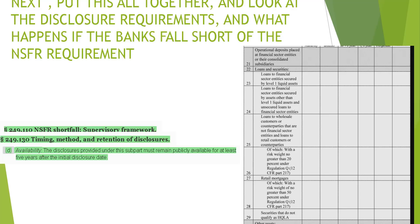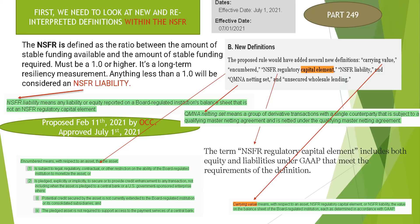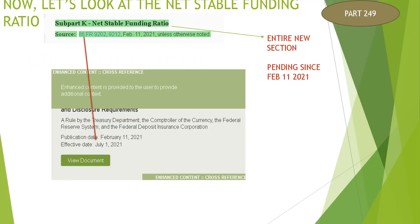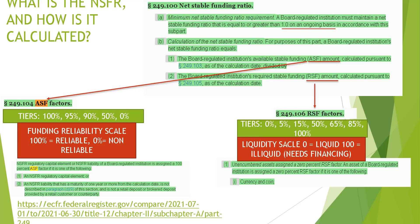To reiterate: we took a look at the NSFR, effective July 1st — basically a new measurement of reliability of funding and liquidity, determined by two factors, the RSF and the ASF, which each play their own part in determining this new NSFR factor. Anything that's not an NSFR regulatory capital element or falls below the 1.0 mark is considered a liability and must be reported on the disclosure form.